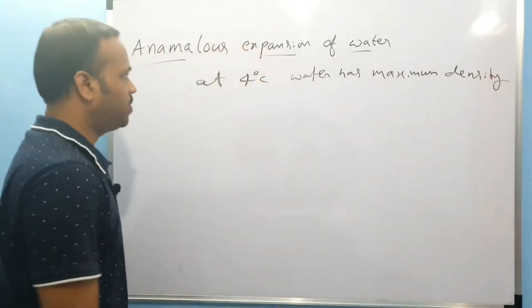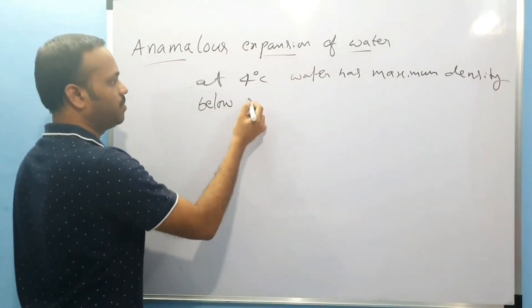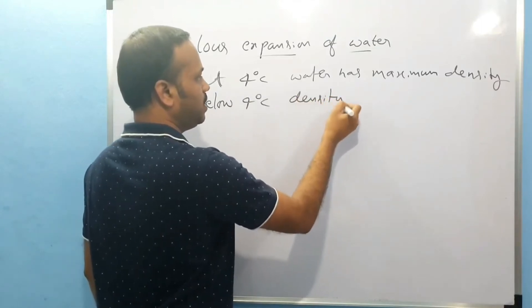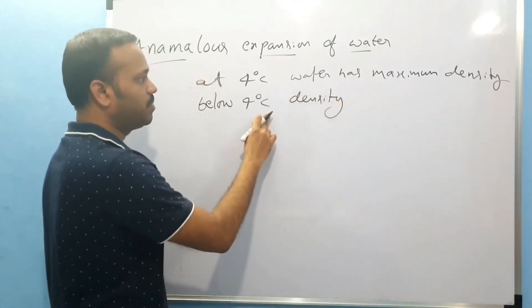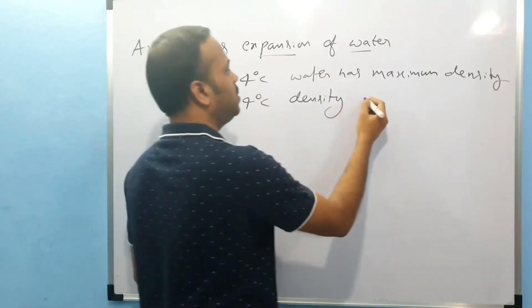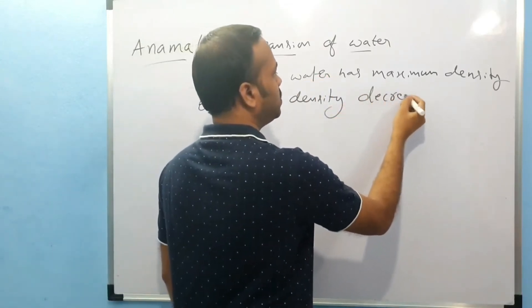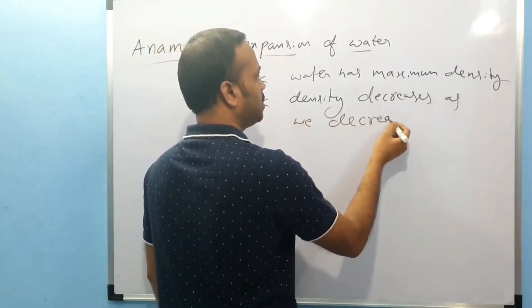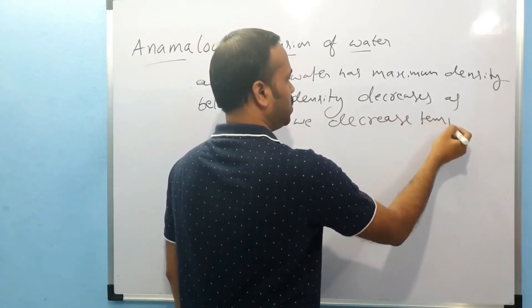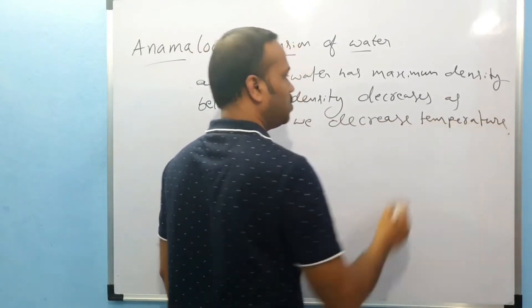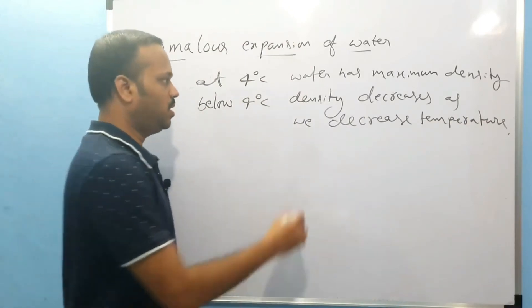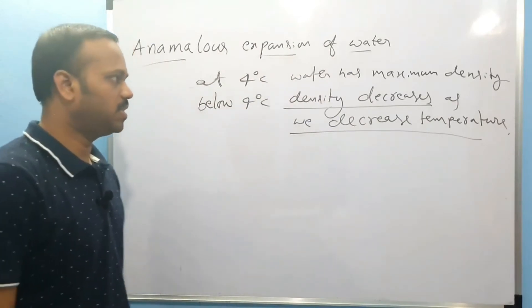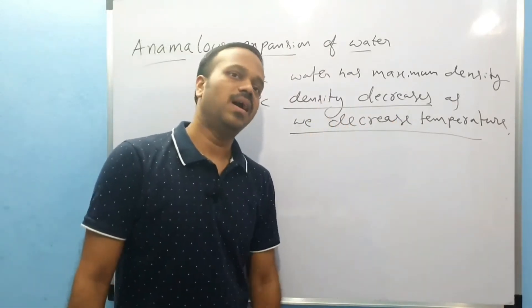Water has maximum density. Below 4 degrees, the density, instead of increasing as temperature decreases, actually decreases. As we decrease temperature, the density is increasing above 4 degrees, but below 4 degrees density decreases as we decrease the temperature.